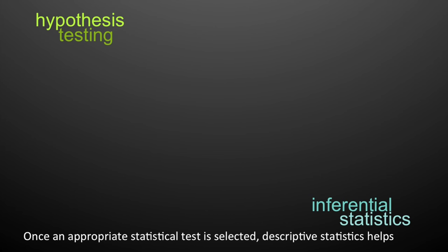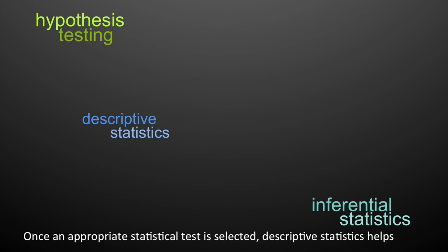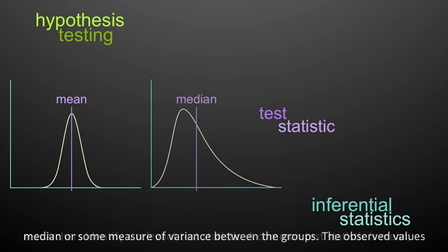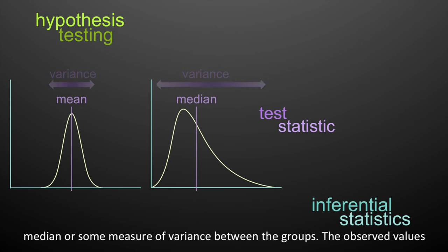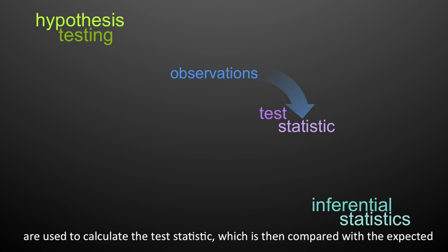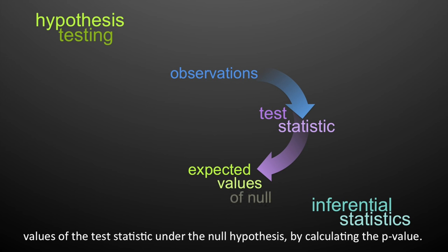Once an appropriate statistical test is selected, descriptive statistics helps researchers identify a relevant test statistic — a common test statistic is mean, or median, or some measure of variance between groups. The observed values are used to calculate the test statistic, which is then compared with the expected values of the test statistic under the null hypothesis by calculating the p-value.